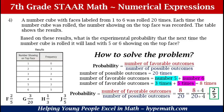We need to add the number of times 5 was rolled and the number of times 6 was rolled. For the number 5 it was rolled 3 times; for the number 6 it was rolled 5 times. We add those together: 3 plus 5 equals 8. So we plug in our values — 8 favorable outcomes over 20 possible outcomes. Is that the final answer? No, because we always want to reduce our fraction to simplest form.